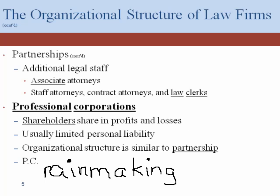Another circumstance in which associate attorneys become staff attorneys is at the request of the associate attorney. You may wonder why an associate not trying to become a partner would choose to get off partnership track. Many times this is a lifestyle choice. As I said before, associates are expected to bill lots and lots of hours. If you have small children, the hour commitment may be beyond your interest or ability to meet, so you may say you want to get off partnership track — maybe permanently, maybe for some period of time — and move to a 45 or 50 hour a week position, which is more along the lines of what a staff attorney would do.